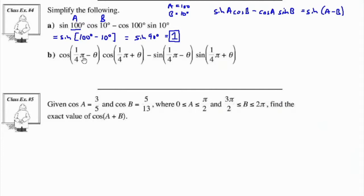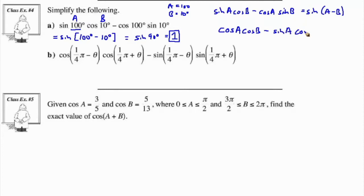Next, we have cos of (π/4 minus theta) times cos of (π/4 plus theta) minus sine of (π/4 minus theta) times sine of (π/4 plus theta). Taking a look at this, we have cos of A times cos of B minus sine of A times sine of B — that's the pattern for cosine of A plus B.